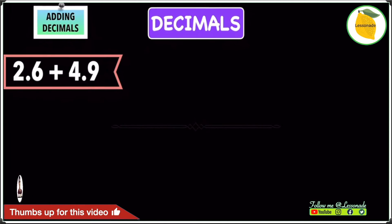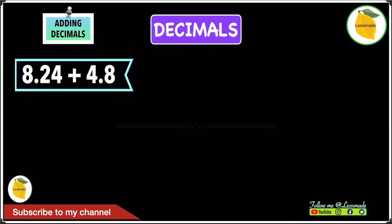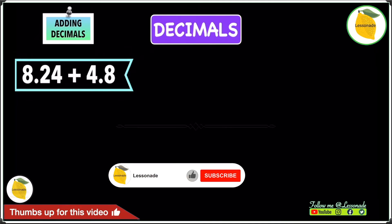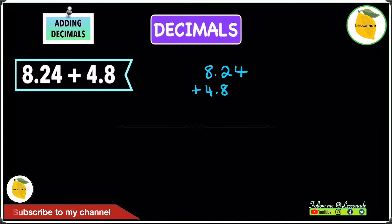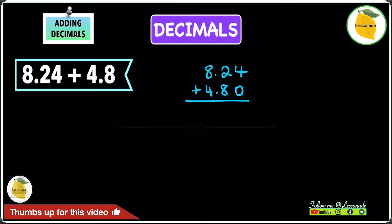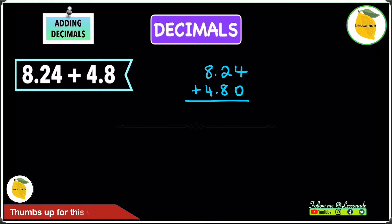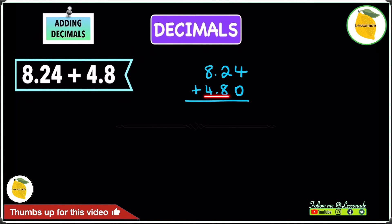Now let's look at another example: 8.24 plus 4.8. We arrange this as if we're adding whole numbers, making sure decimal points are lined up. After lining them up, we have a gap with no number, so we fill that with a zero. Remember: adding a zero to the end does not change the value — 4.80 and 4.8 are the same.